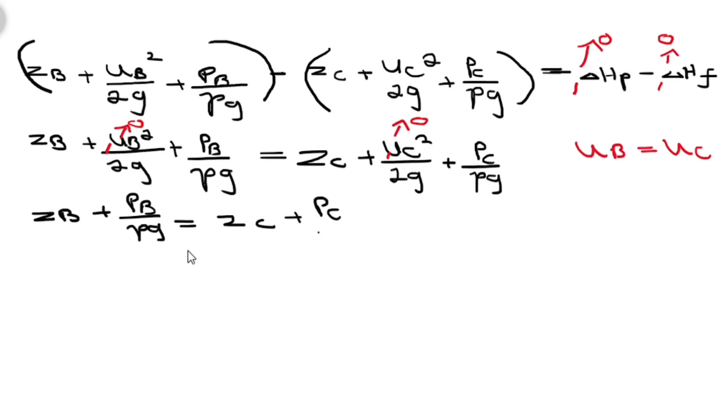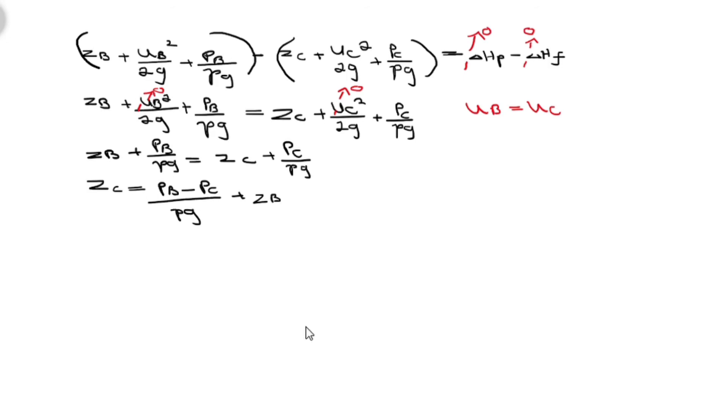We can rearrange this to Zc equals pressure at B subtracting pressure at C over density gravitational force which is constant plus the height at point B. We took point A to be the reference point so we can say height at A is equals to zero.